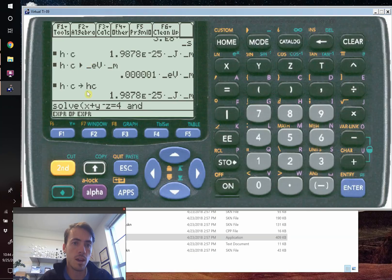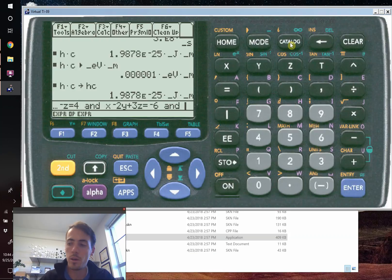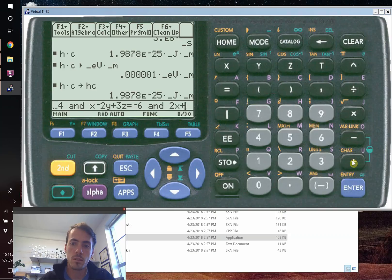So we hit okay. And our next equation is X minus 2Y plus 3Z equals negative 6. We're going to go up to catalog again and hit AND one more time. Our third equation is going to be 2X plus 3Y plus Z equals 7.